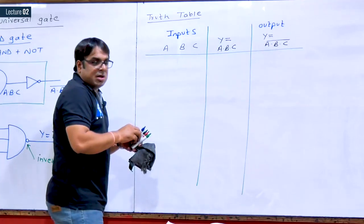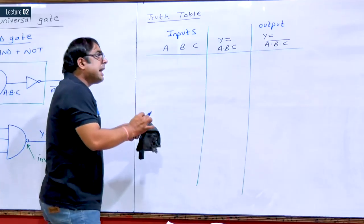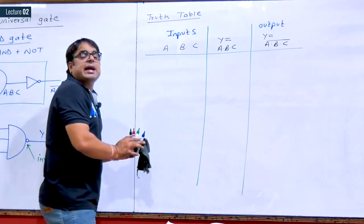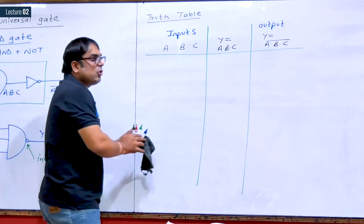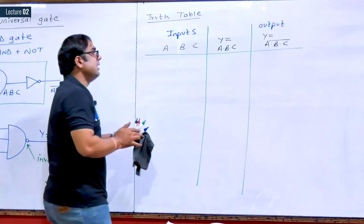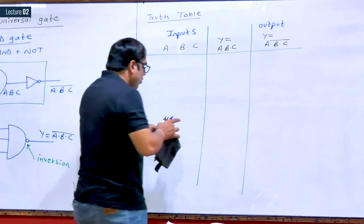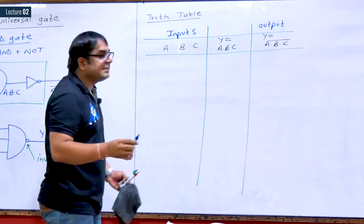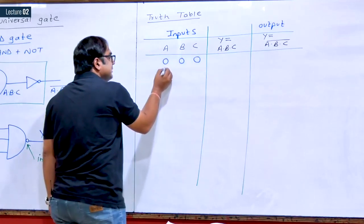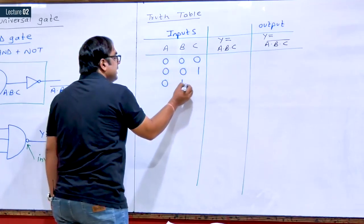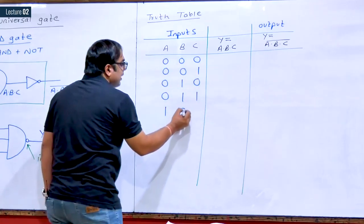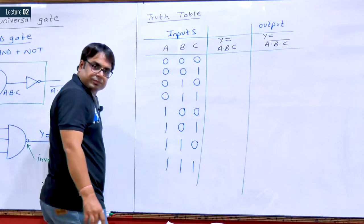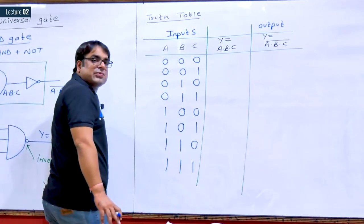Again we have three inputs, so we can switch to 0s and 1s directly. Three inputs give 8 combinations: 000, 001, 010, 011, 100, 101, 110, 111. In an AND gate, if any input is at logic 0, the output is also at logic 0. Output is logic 1 only when all the inputs are at logic 1.